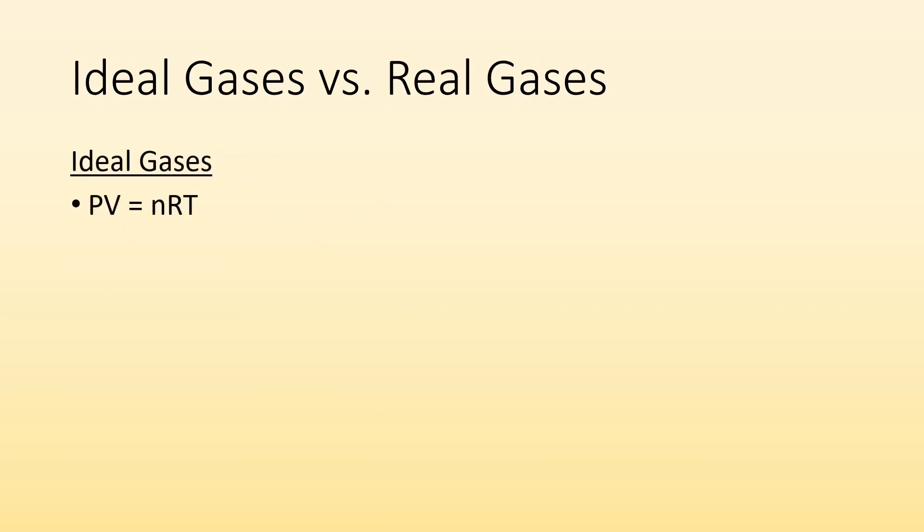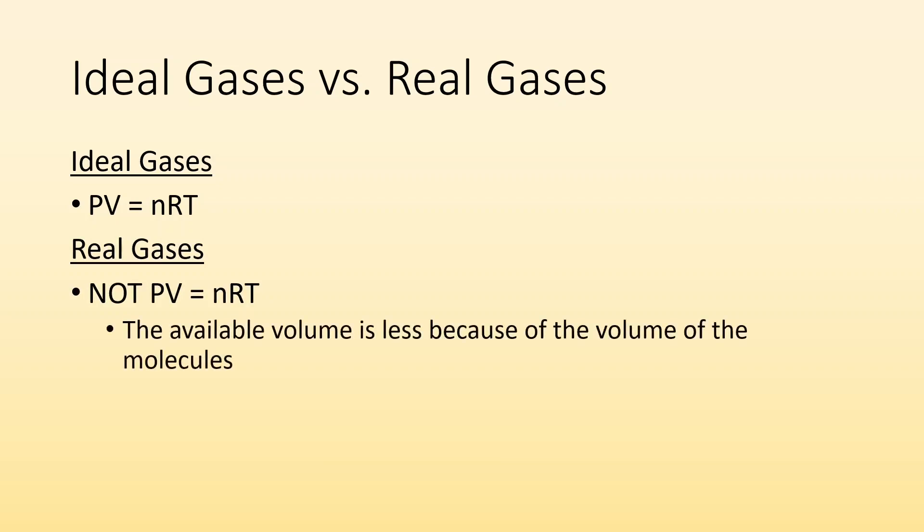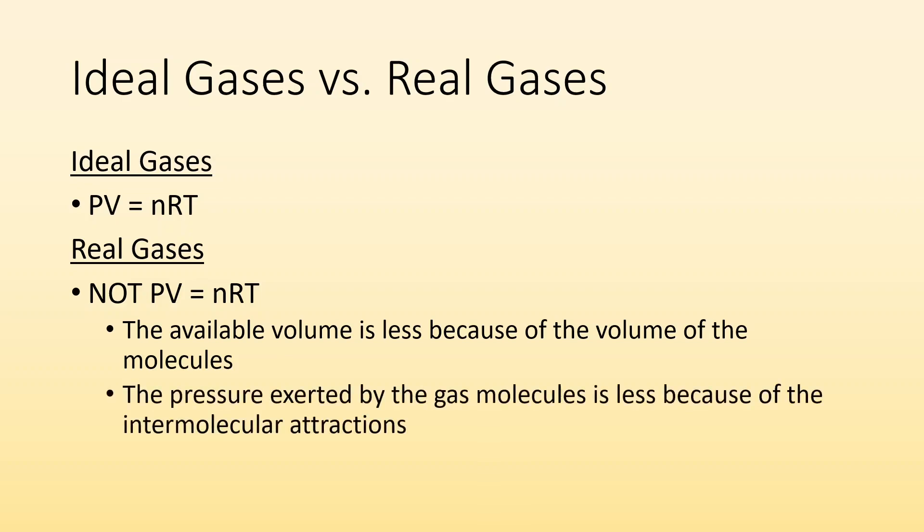Ideal gases, we got PV equals nRT. That's our ideal gas law. But real gases, it's not PV equals nRT because we got to account for the attraction and the volume of these particles. The available volume is less because the molecules actually take up volume. And the pressure exerted by the gas molecules is less because of the intermolecular attractions. They're being slowed down because they're attracted to the other gas particles.